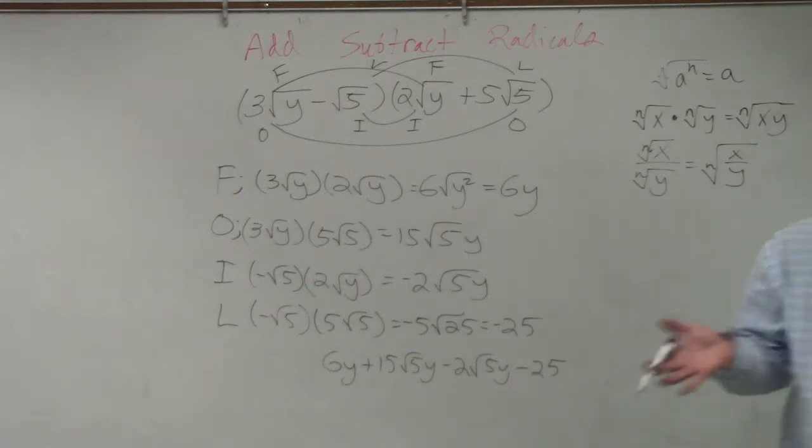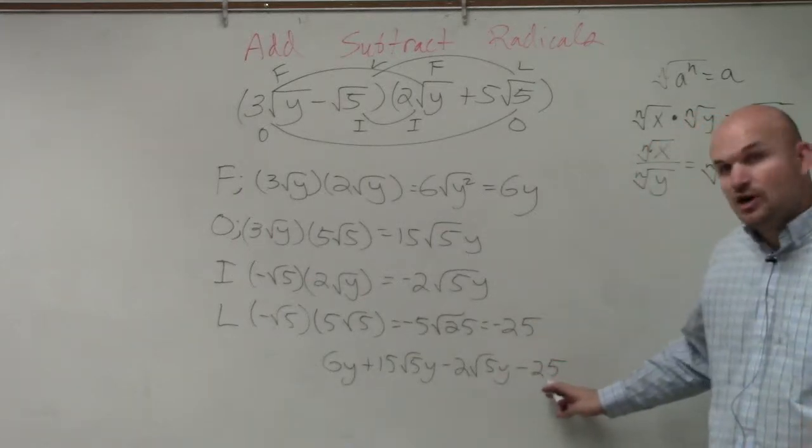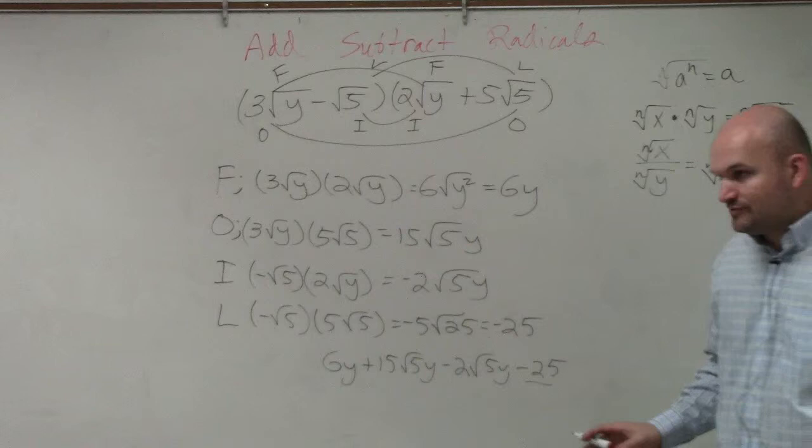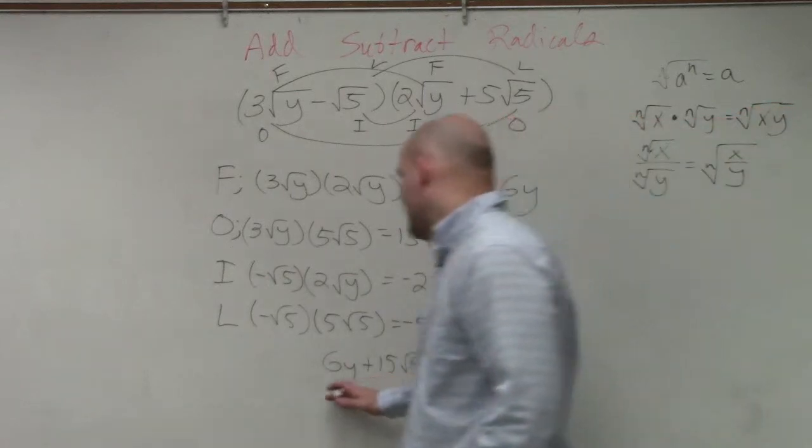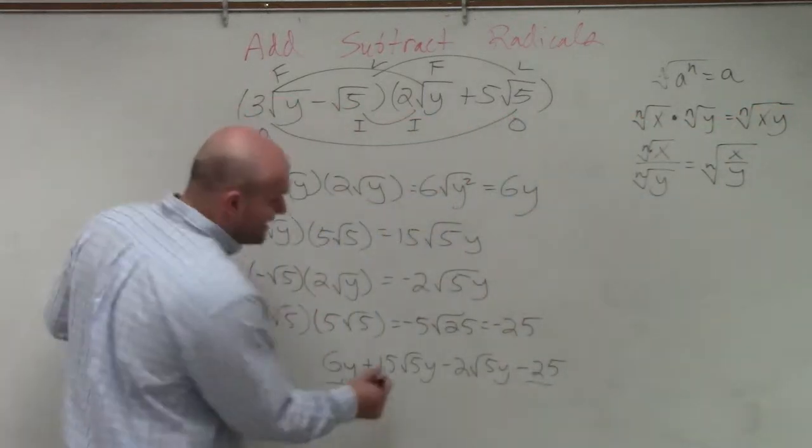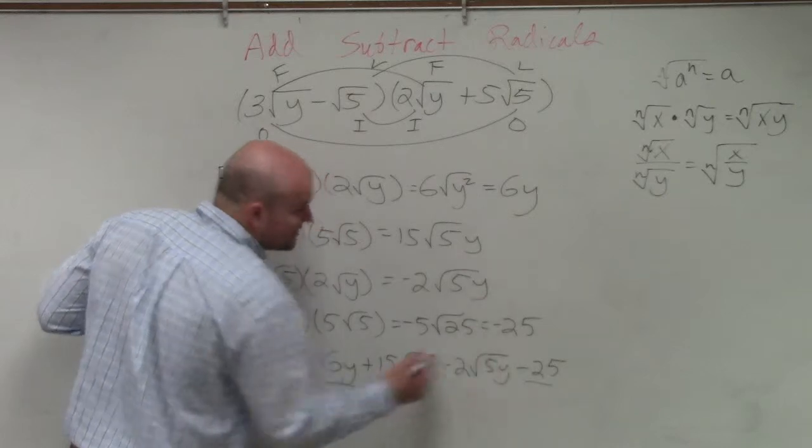So I look at, and I remember to combine, to add and subtract, we have to have like terms. So you guys can see, negative 25 is my only number. I only have 1 6y. However, I do have the square root of 5y and the square root of 5y.